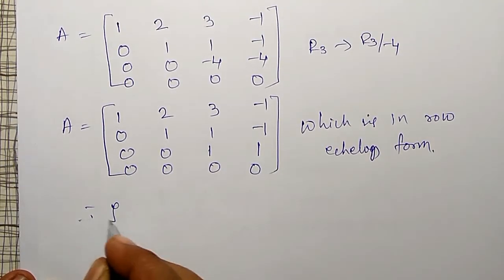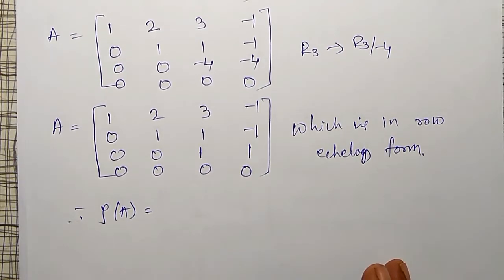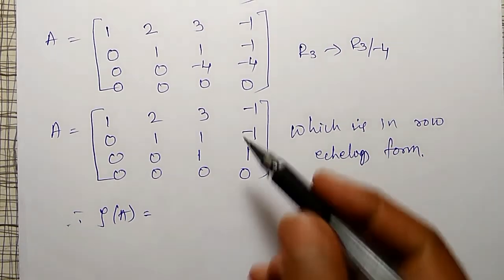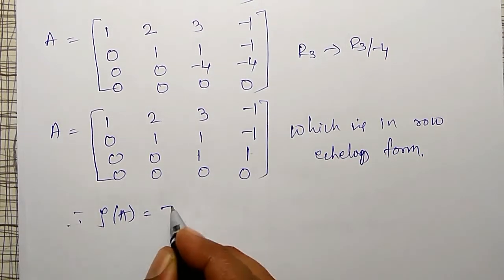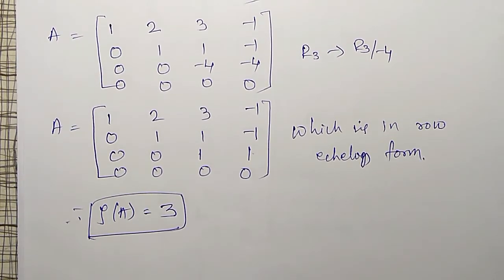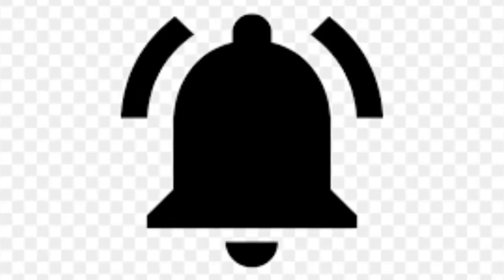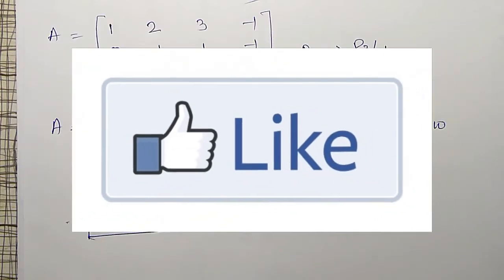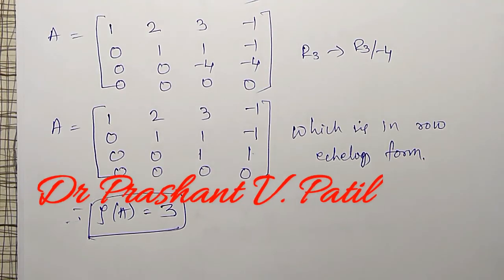Therefore, rank of this matrix is equal to the number of non-zero rows. There are 3 non-zero rows — the fourth row is fully 0. Therefore, rank of this matrix is 3. Some more examples on rank of a matrix will be done in my next videos. If you are not subscribed, please subscribe my channel, hit the bell icon for notifications, like, comment, and share this video. Thank you, friends.